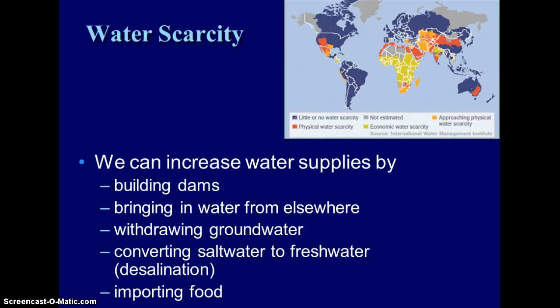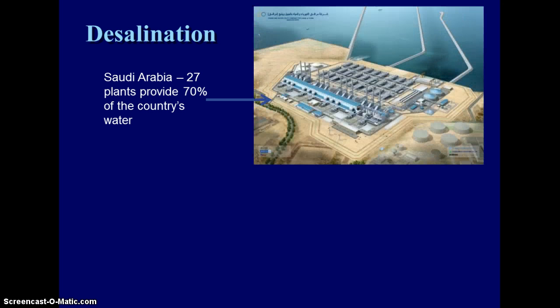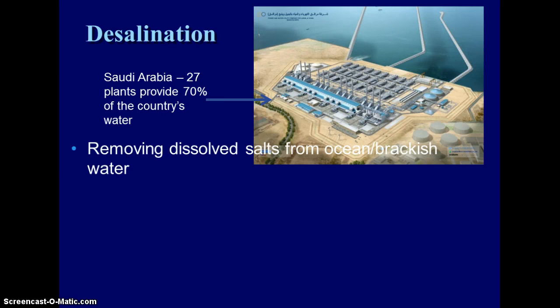Importing food from areas that have rainfall can help cut down on the amount of irrigation used in drier areas, though it won't help much to import food from an area that also uses heavy irrigation. Desalination is another way to increase our usable water. This is one of the things they're doing in Saudi Arabia — they have 27 desalination plants and 70% of their water originates as salt water. The process takes either salt water from the ocean or brackish water, which is a mix of fresh and salt water usually found at the mouth of a river, and removes the dissolved salts.